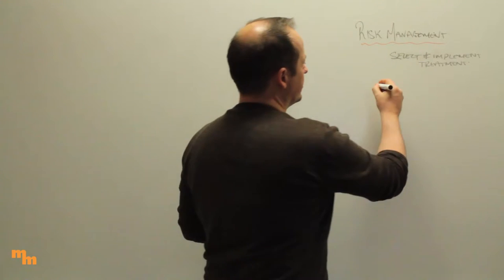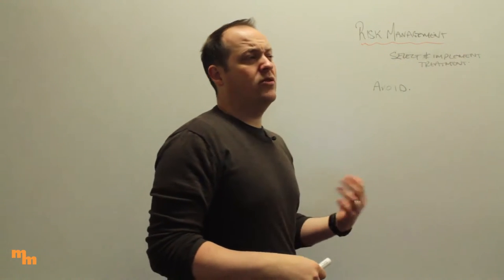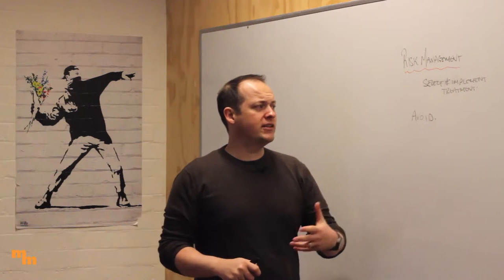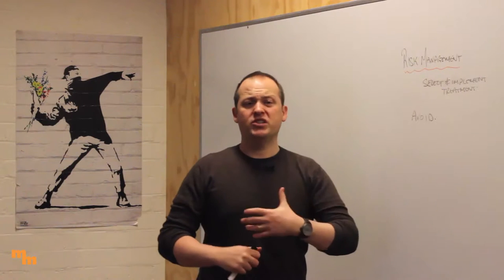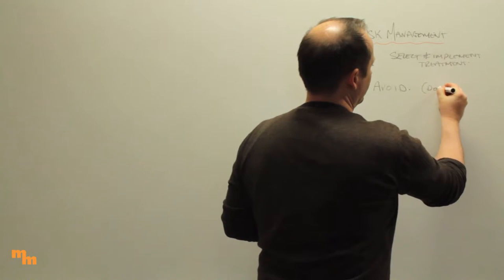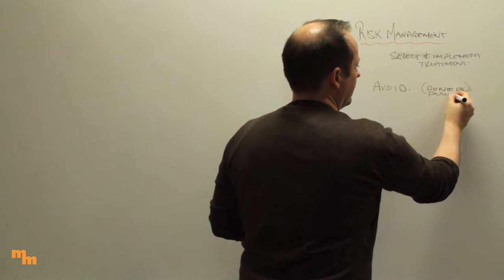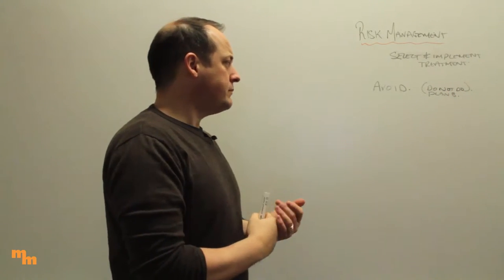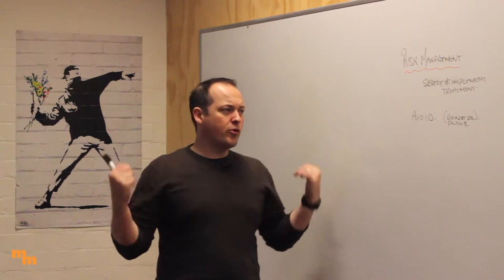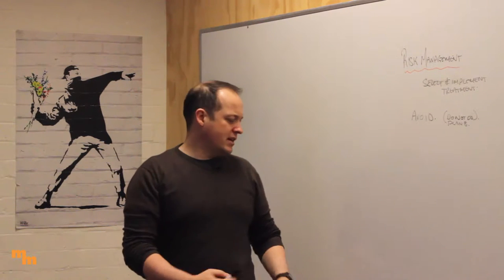The first strategy is avoidance — can we avoid the risk? We make a decision not to become involved in the situation that can bring risk onto us; we just don't do that activity. If we're planning to do something and we think it's too risky, can we just not do it? Is there a Plan B? Can we do something else instead of undertaking that activity? To avoid means do not do that — anything apart from actually undertaking the risk.